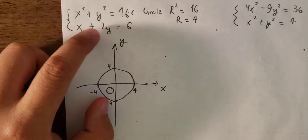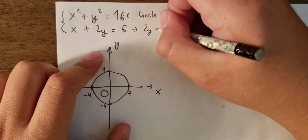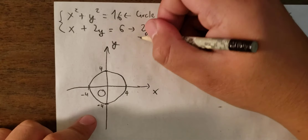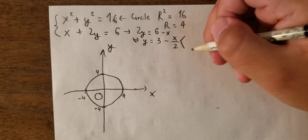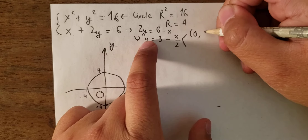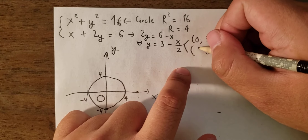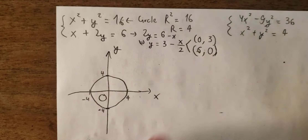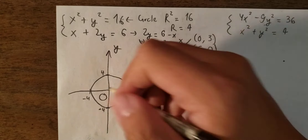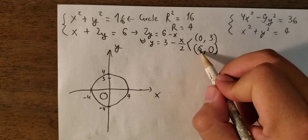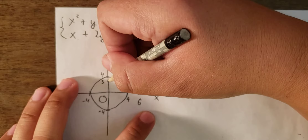The next equation is x plus 2y equal to 6. We put x on the right and divide by 2. Now we choose two points: if x is 0, then y equals 3. If y becomes 0, then x becomes 6. So we have two points: (0, 3) and (6, 0). Now we draw the linear equation.